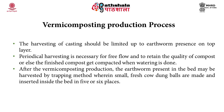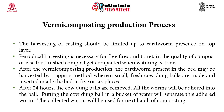After vermicompost production, the earthworms present in the bed may be harvested by a trapping method, where small fresh cow dung balls are made and inserted inside the bed in 5 or 6 places. After 24 hours, the cow dung balls are removed — all the worms will have adhered to them. Putting these cow dung balls in a bucket of water will separate the adhered worms. The collected worms will be used for the next batch of composting. At large-scale vermicomposting facilities, earthworms are separated from vermicompost by hand winnowing or machine winnowing methods.